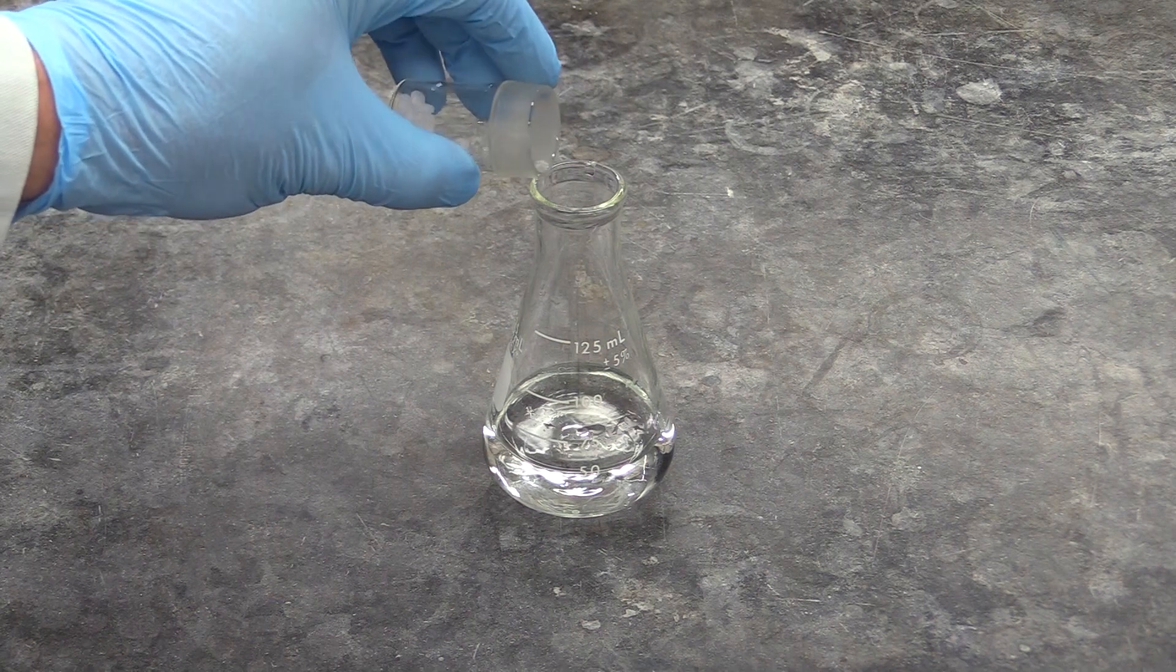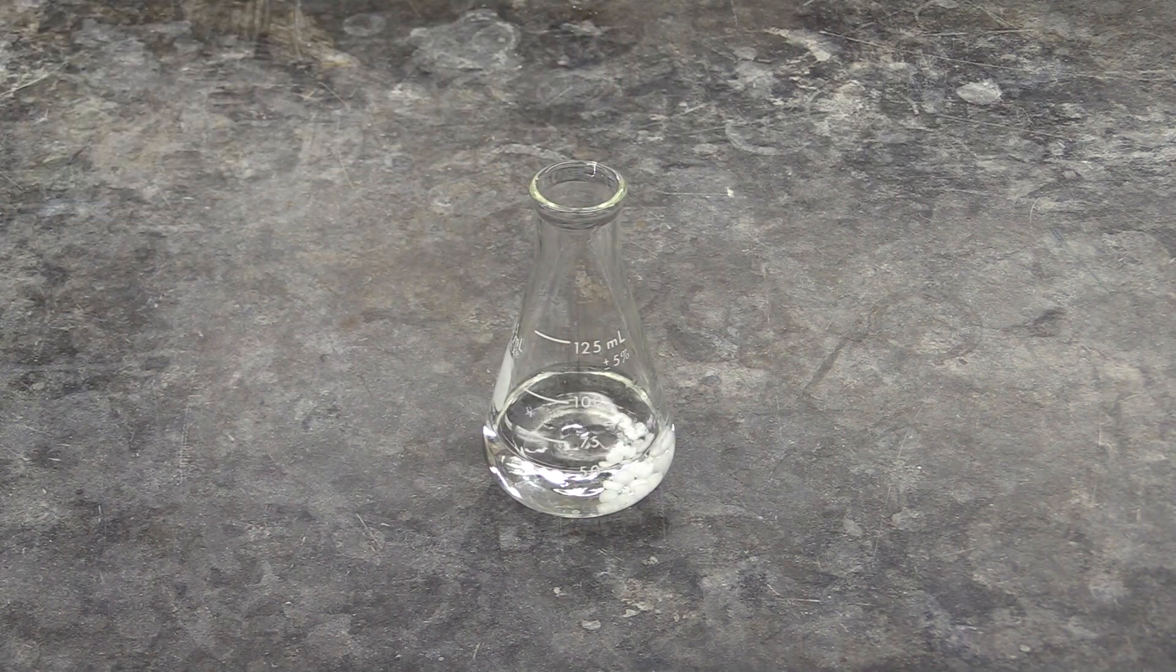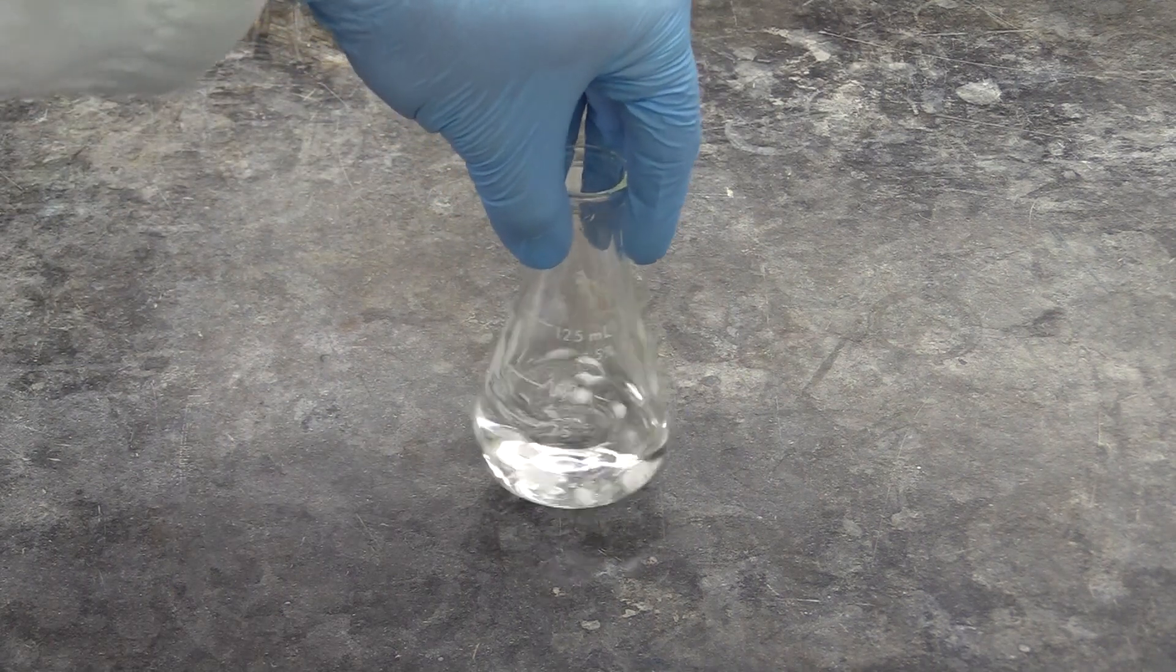And finally, you will add a few grams of sodium hydroxide to a flask of DI water. As for the previous flask, you'll monitor this one's temperature over the following several minutes.